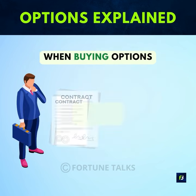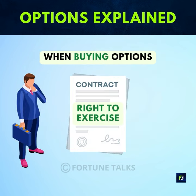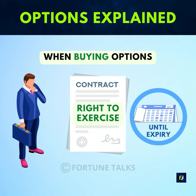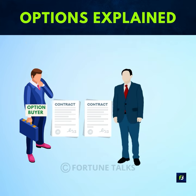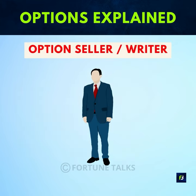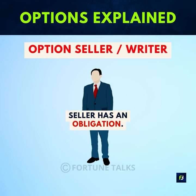When buying options, the investor or trader has the right to exercise that option at any point up until the expiration date. The buyer of the option contract is called the option buyer or holder of the option, while the person who sells the option contract is called an option seller or writer of the option, who has an obligation.